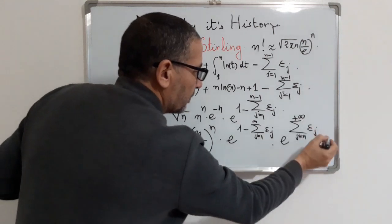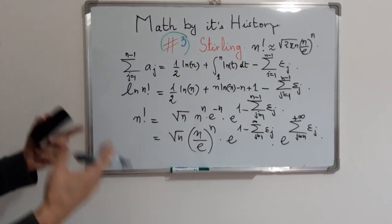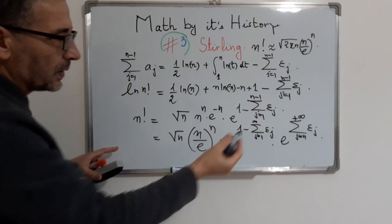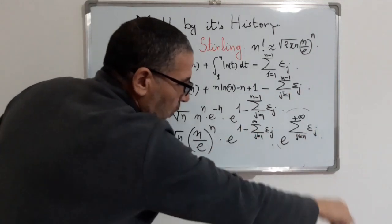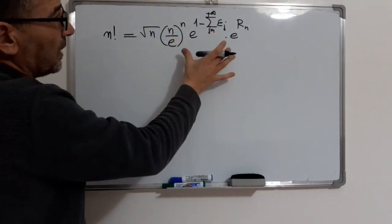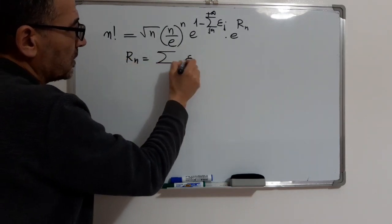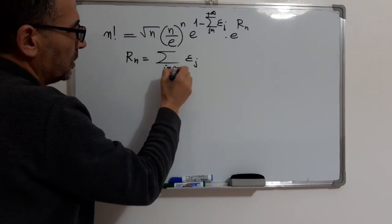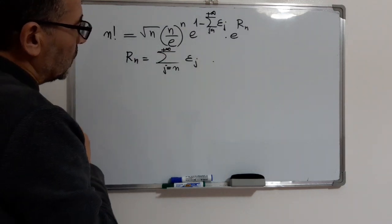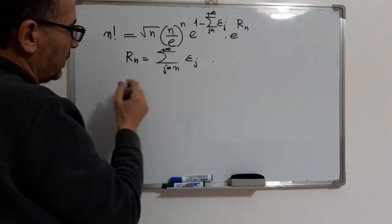As n tends to infinity, we need this equality to hold. It must be proved that this series is convergent, so the terms tend to 1. Our equality then takes the form with r_n as the remainder, which equals the sum of epsilon_g from n to infinity. We want to prove the convergence of this series.